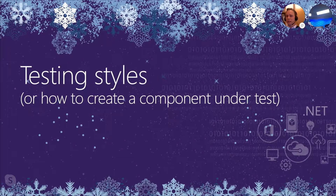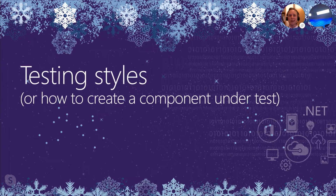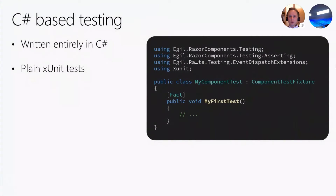Let's look at the different testing styles supported by the library. The primary difference between the testing styles is how we create the component under test and any HTML fragments we might need in our tests. The first style is the C#-based testing style, which is basically the same thing as Steve showed earlier. My library does it a little bit differently, but you should see the same concepts and patterns.